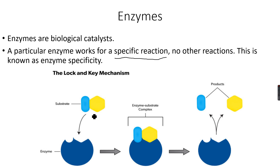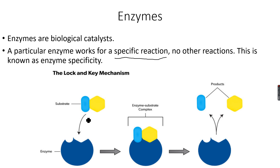This is called the lock and key mechanism. The enzyme has a very distinct shape — each enzyme has a unique shape. So it can only accept substrate molecules which, in the case of amylase, are starch molecules. The enzyme is amylase and the substrate is starch. The substrate exactly fits into the enzyme, just like only a specific key can open a specific lock — that's why it's called the lock and key mechanism.